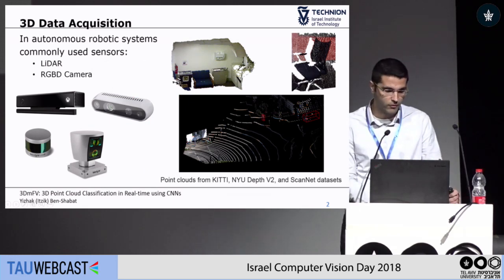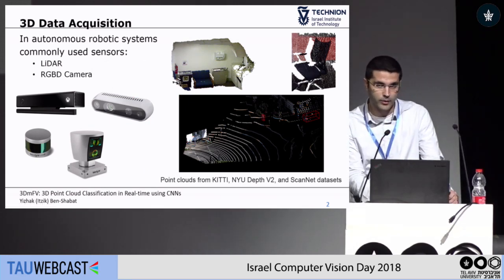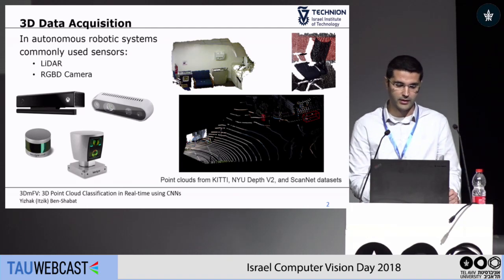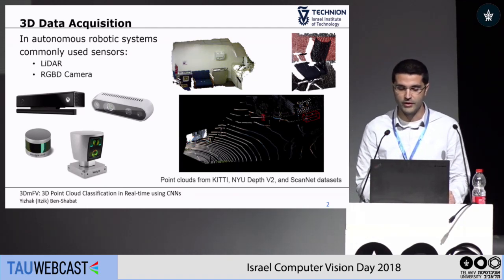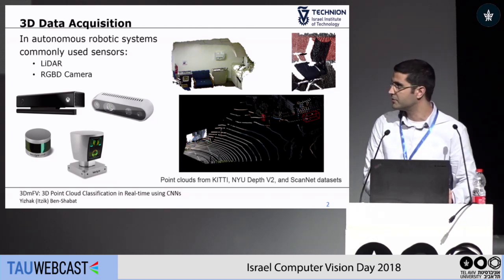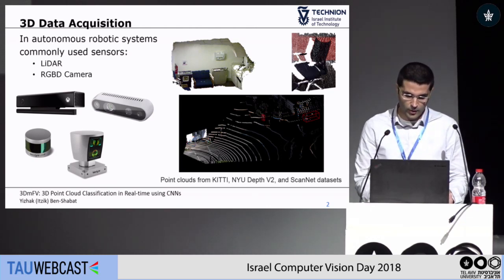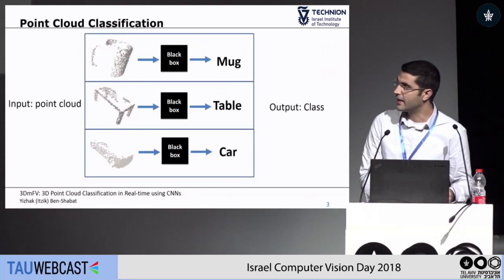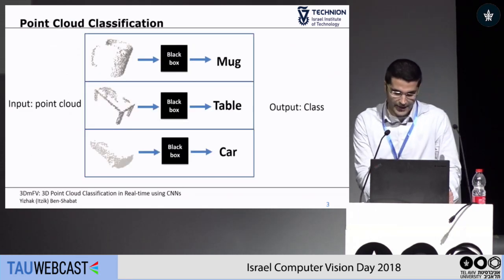In modern autonomous systems, they are usually equipped with many RGB cameras, but also some sort of 3D acquisition device, whether it's a LIDAR sensor or an RGBD camera. What we want to do is to take a point cloud and classify it.